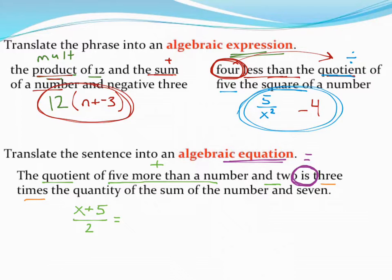Like we said above, quantity is typically going to tell you to group something together. So 3 times a group of something. Once again, I want to find a sum, so addition. The sum of that number and 7.